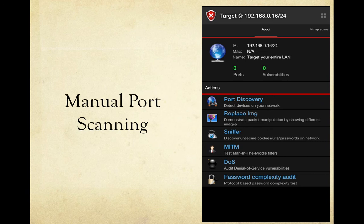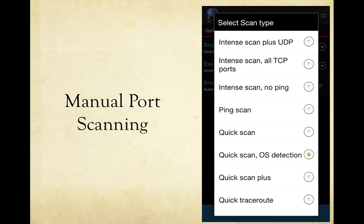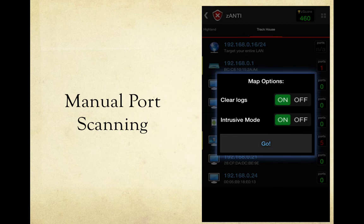Manual port scanning is where you can set what kind of scans you want to do instead of the defaults. You have different scan types, you can execute scripts when running those scans, and there's a smart scanning option that automatically checks for vulnerabilities — which you usually want to keep on by default. Scan types include intense scans, regular ping scans, and quick scans. There are also various scripts you can run during a scan. One last option before the map: you can clear logs or not, and run intrusive mode depending on how stealthy you want to be.